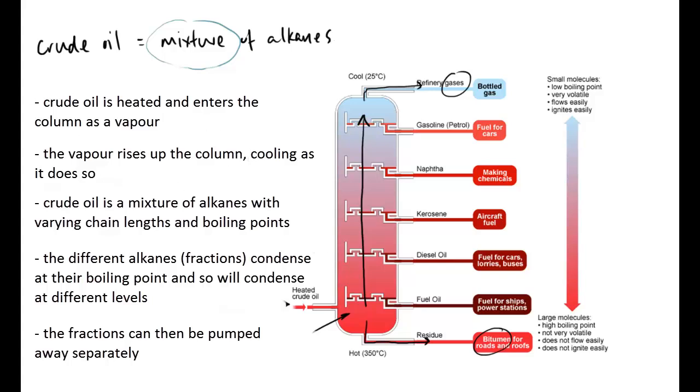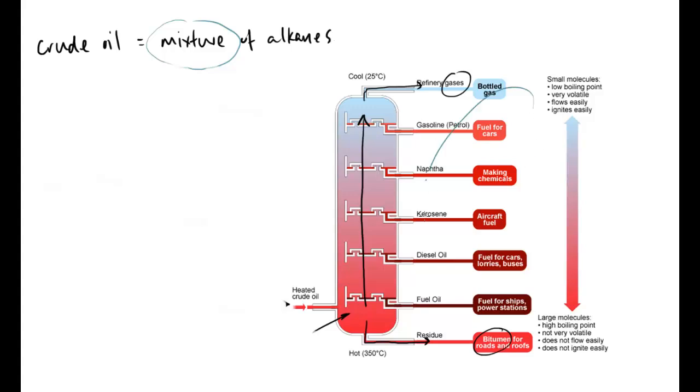The most useful end is the top end where we have fuels for cars - we make a lot of money from this. But crude oil invariably has more of the bottom end, which is not particularly useful or profitable. We want more of the top stuff. So what we can do is crack the crude oil or crack the fractions, make them smaller, therefore making things that are more useful and we can sell for more money.